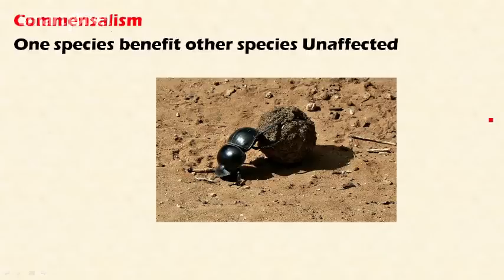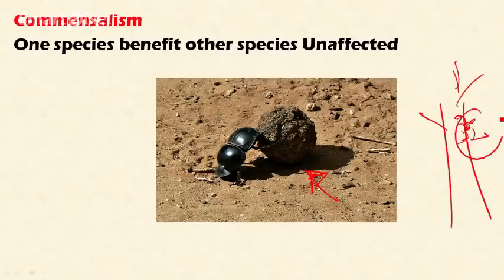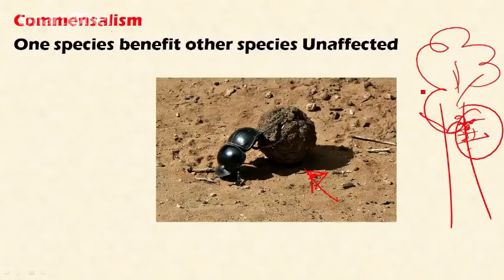The next interaction is commensalism, where one species benefits and the other is unaffected. For example, the dung beetle uses animal dung as food, while the animal that produced the dung is unaffected. Another example is orchids, which grow on tree trunks using aerial roots. Even though orchids do not take nutrients from the tree and have no effect on it, the orchids sustain their own life — this is commensalism.